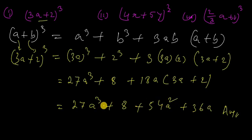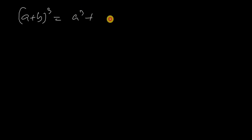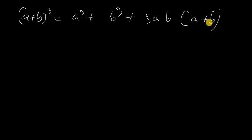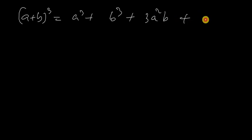The formula is: A plus B whole cube equals A cube plus B cube plus 3 A squared B plus 3 A B squared. That is the full expansion formula for A plus B whole cube.